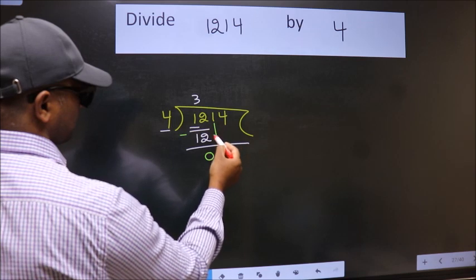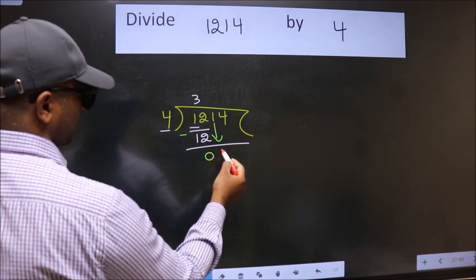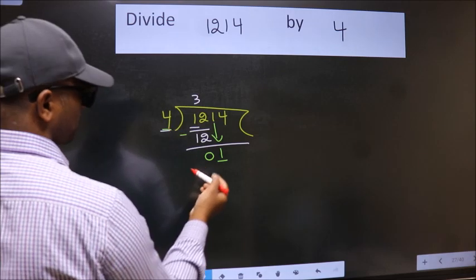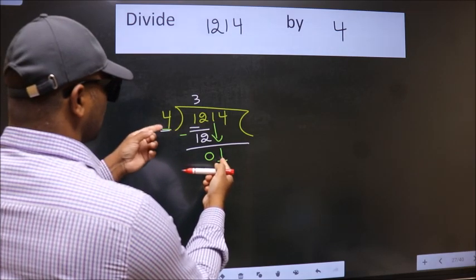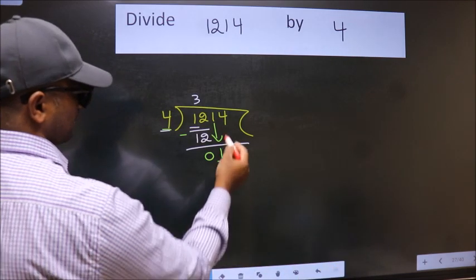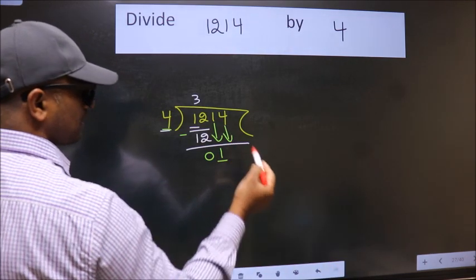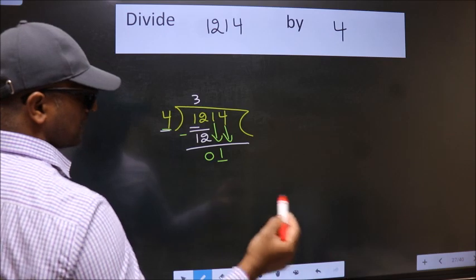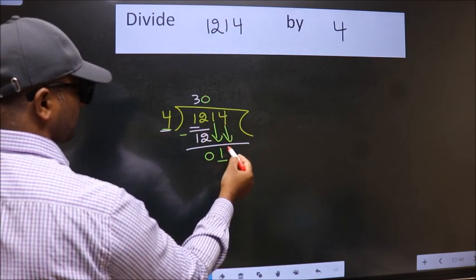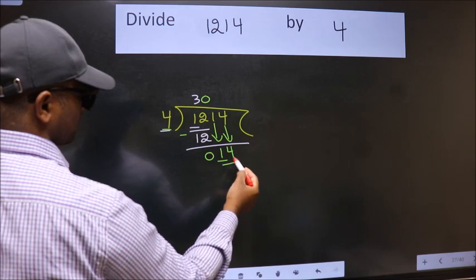After this, bring down the next number. So, 1 down. Now here we have 1, here 4. 1 is smaller than 4, so we should bring down the second number. The rule to bring down the second number is put 0 here, then only we can bring this number down. So, 14.